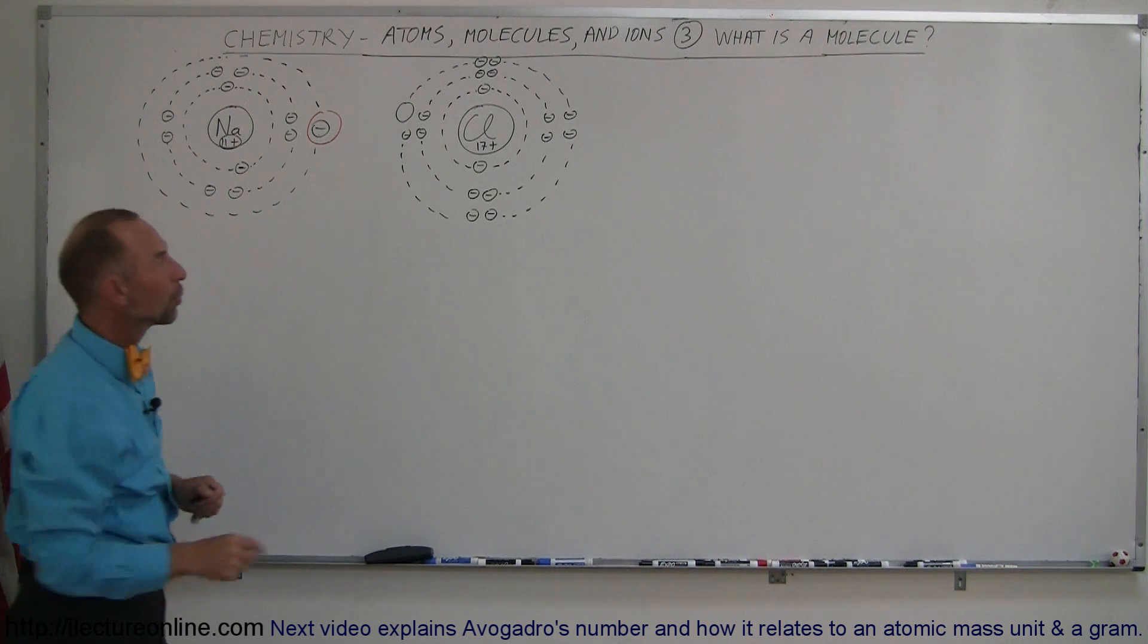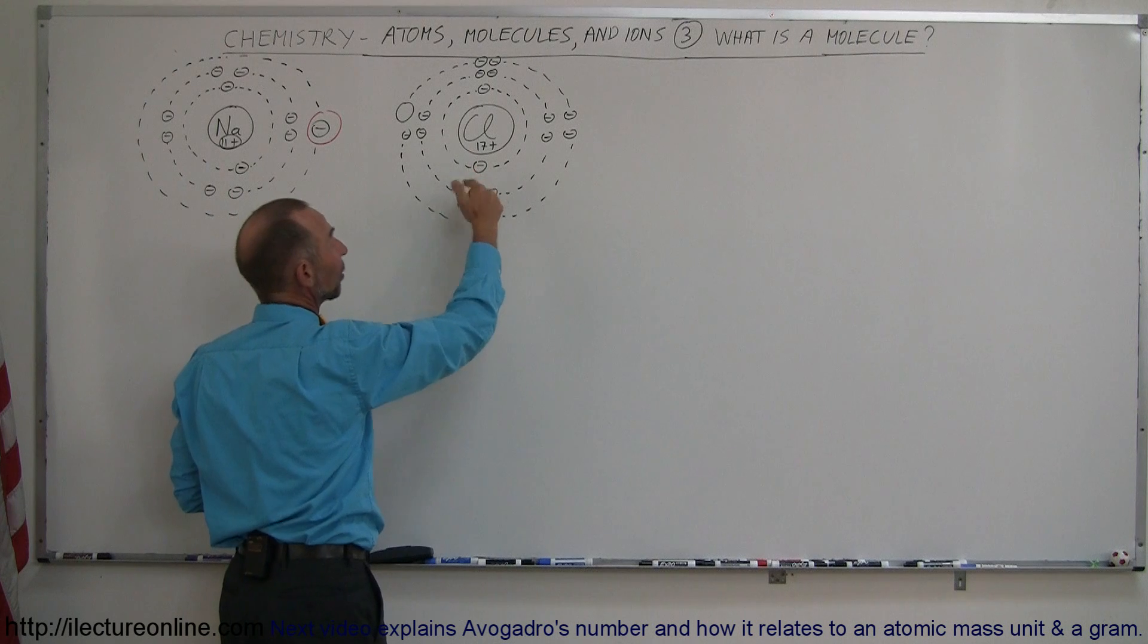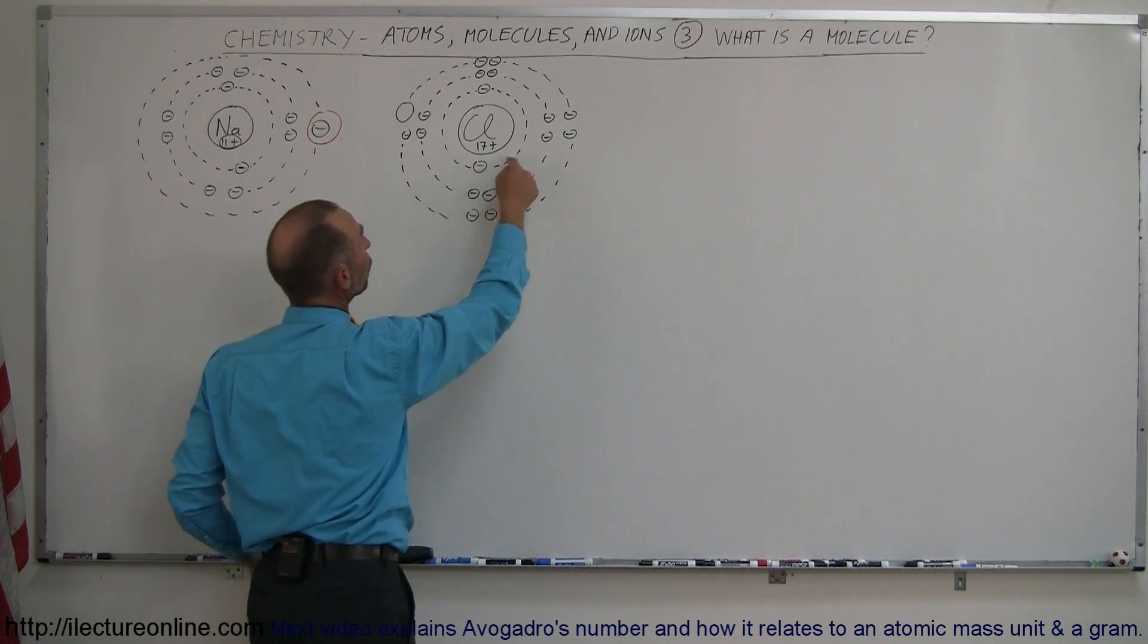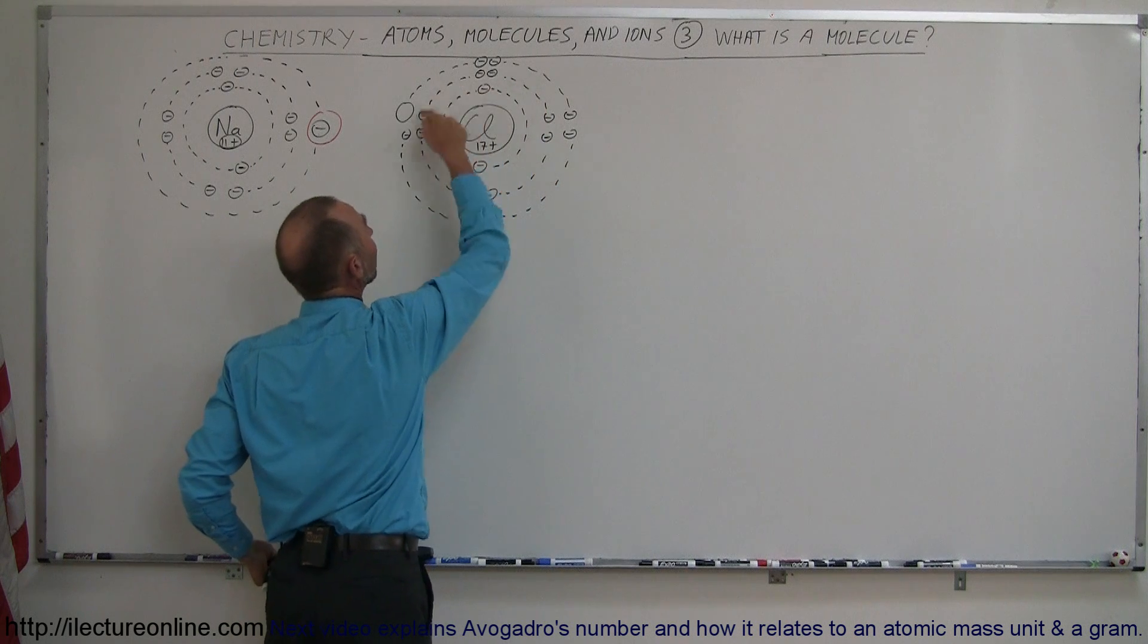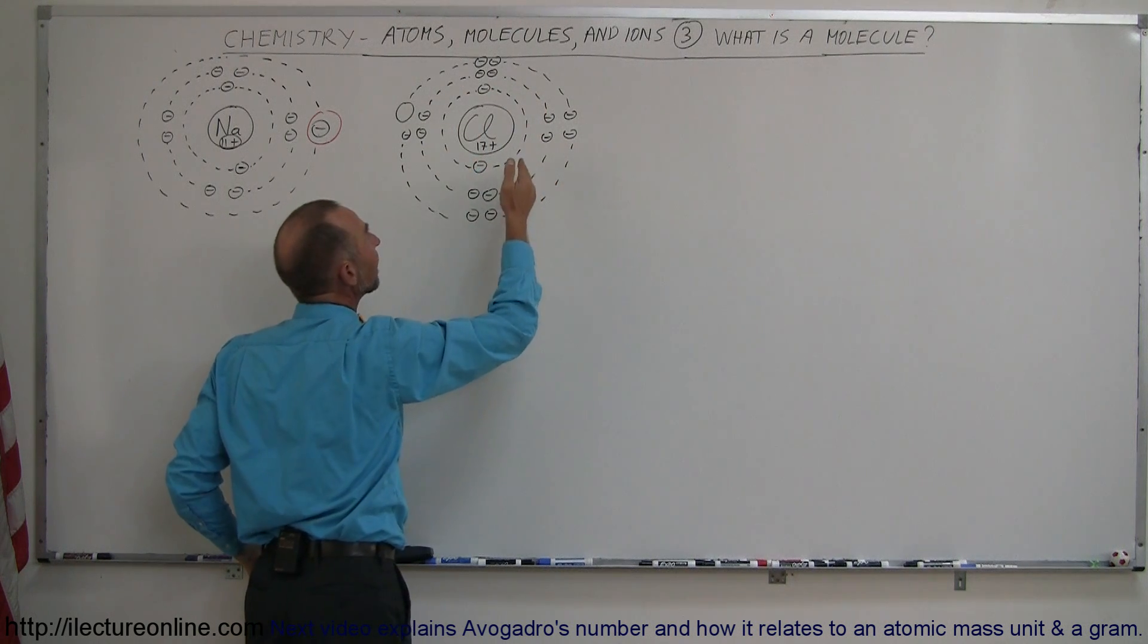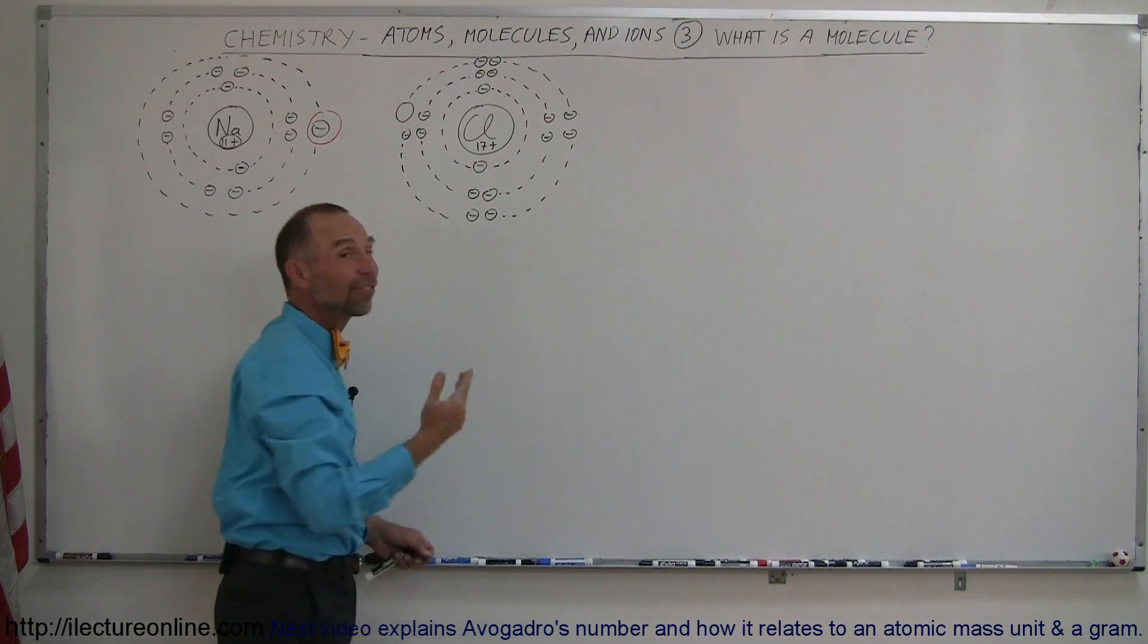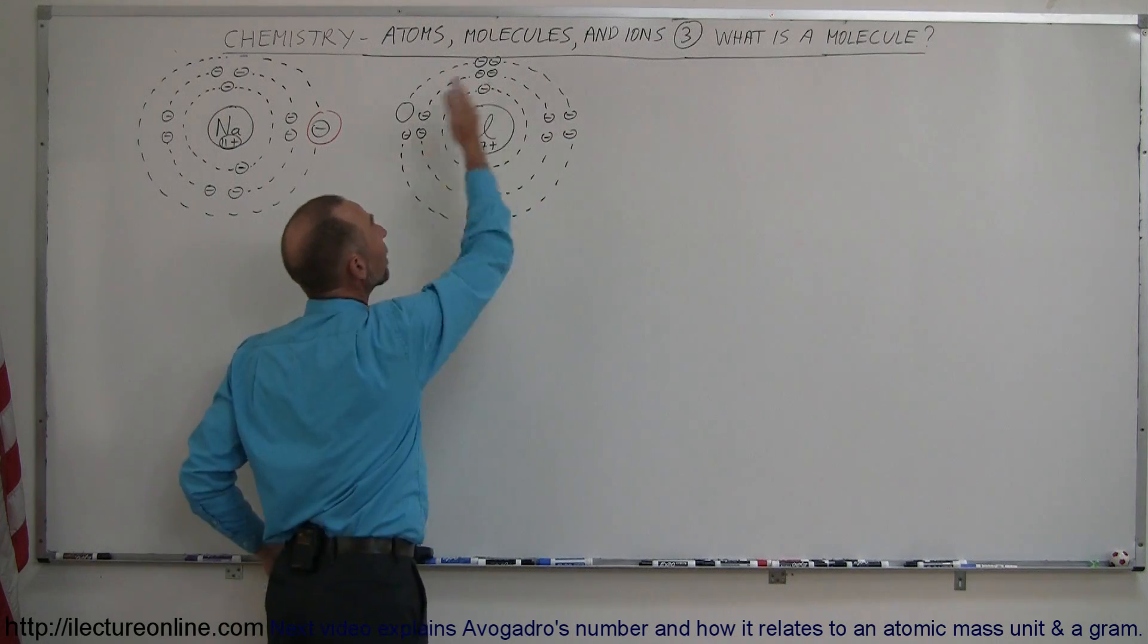Chlorine has 17 protons in the nucleus. It has therefore 17 electrons. The first 2 reside in the innermost energy level. The next 8 reside in the next energy level. And then the next 7, making a total of 17, reside in the third energy level.